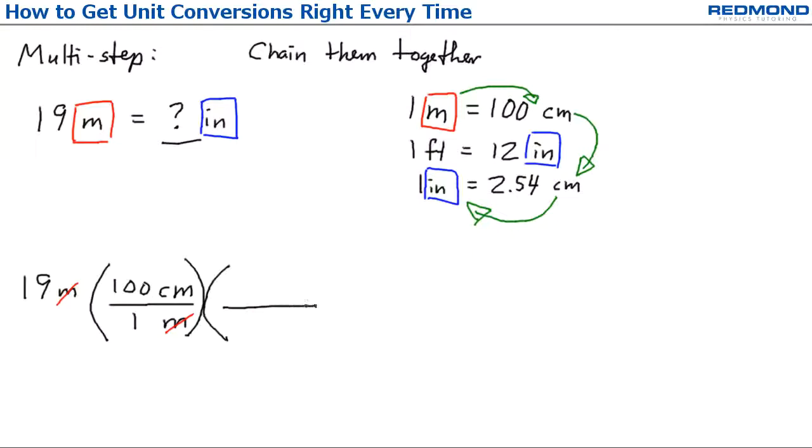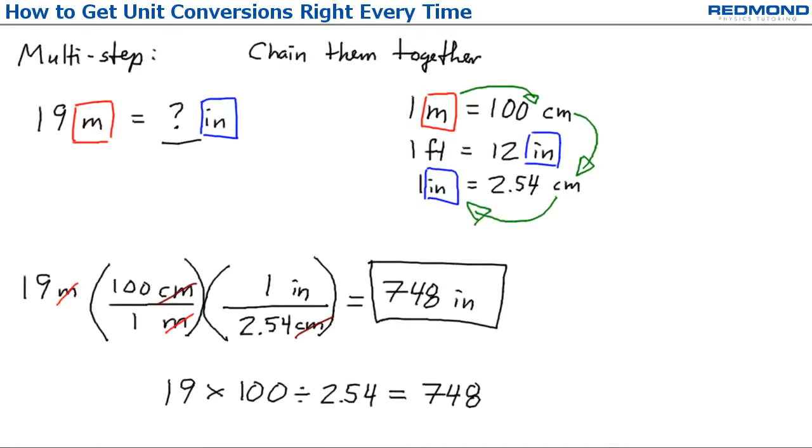Then I'll go from centimeters to inches, so I put 2.54 centimeters on the bottom of the next conversion factor and one inch on the top. Finally, I multiply it out. 19 times 100 divided by 2.54 is equal to 748. So 19 meters is equal to 748 inches.